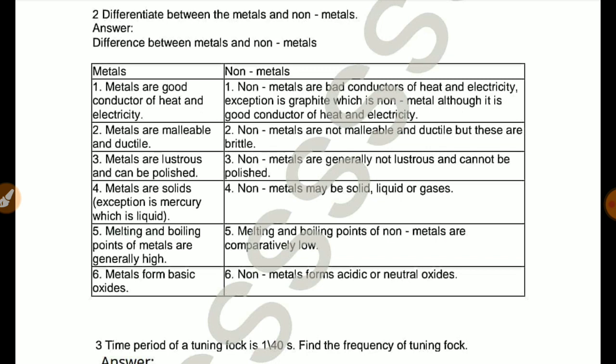Differentiate between metal and non-metal. Metals are good conductor of heat and electricity while non-metals are bad conductors, exception is graphite which is non-metal although it is a good conductor. Metals are malleable and ductile, non-metals are non-malleable and ductile but are brittle. Metals are lustrous and can be polished, non-metals are generally non-lustrous and cannot be polished. Metals are solids, exception is mercury which is liquid. Non-metals may be solid, liquid or gas.